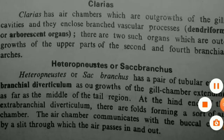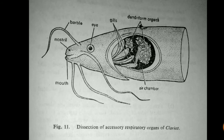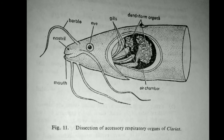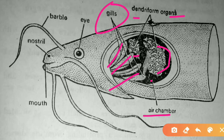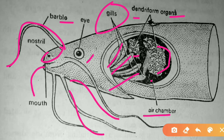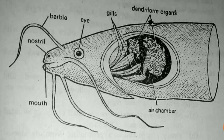The dissection diagram of Clarias shows the air chamber as the black portion, dendriform organs visible as fold-like structures, gills, eye, barbels, nostril, and mouth. This represents the accessory respiratory organs of Clarias.